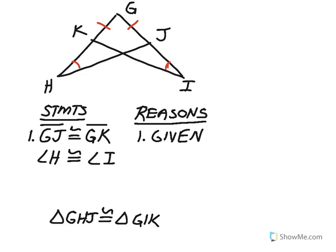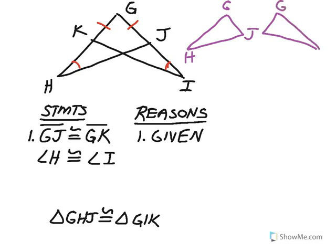I'm going to see if triangles GHJ and GIK are congruent — it's really easier to draw these triangles separated out. This one will be G with J and H, and the other will have G on top, K down here, and I at the other vertex. Now if I mark what's congruent: GJ to GK, and angle H to angle I. The thing to notice is that angle G is in both triangles and is congruent to itself.